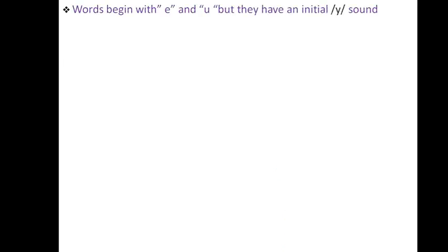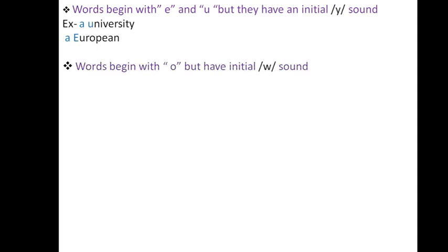Words begin with E and U but they have an initial Y sound. For example, a university, a European. Words that begin with O but have initial W sound. For example, a one-story building.